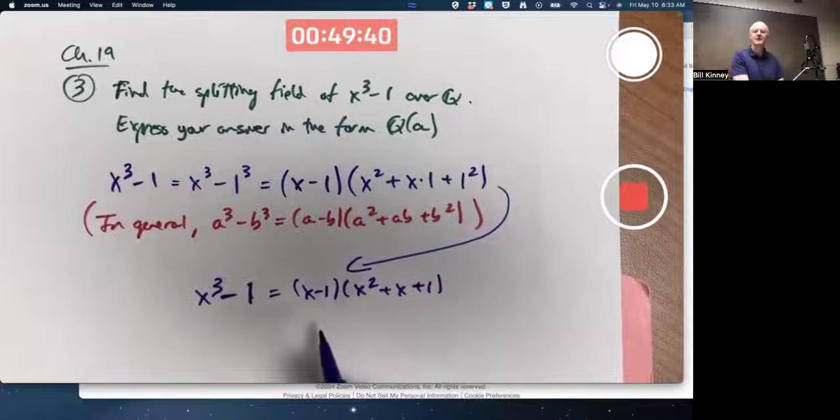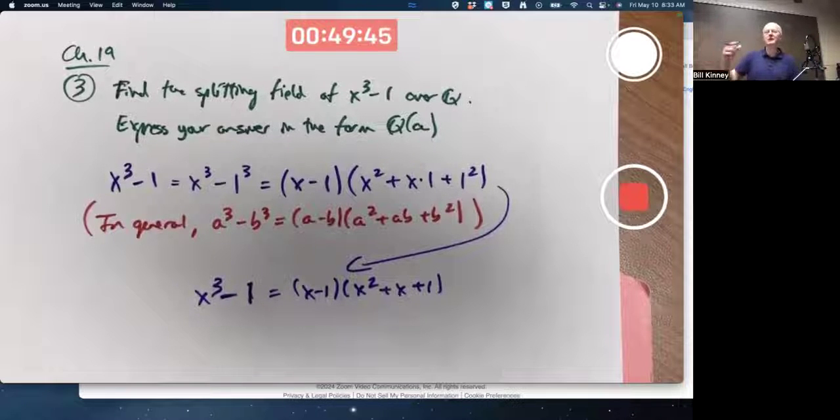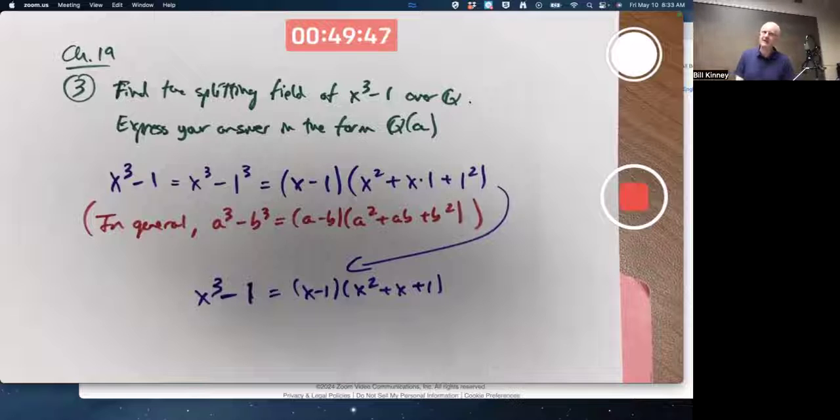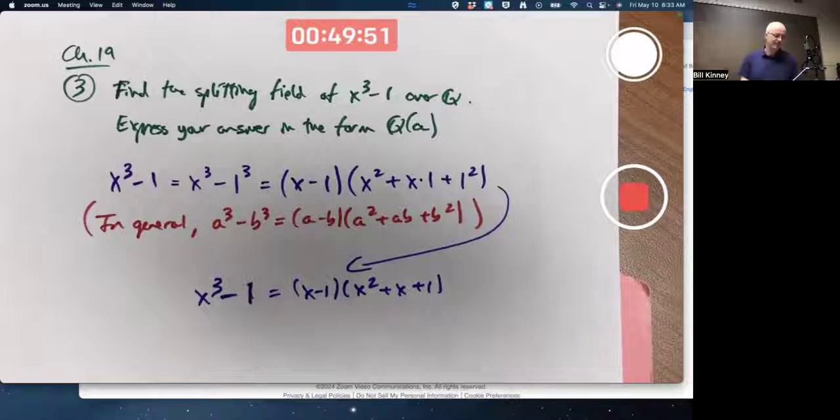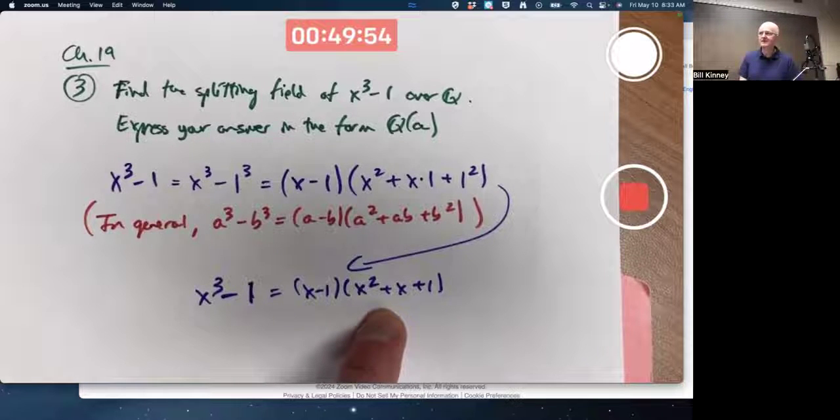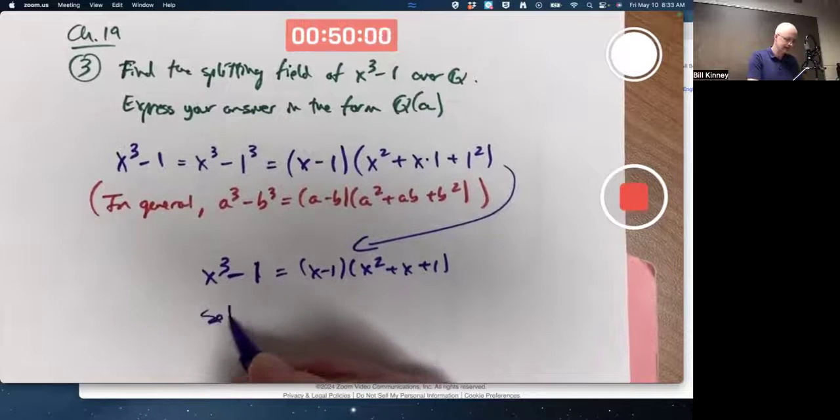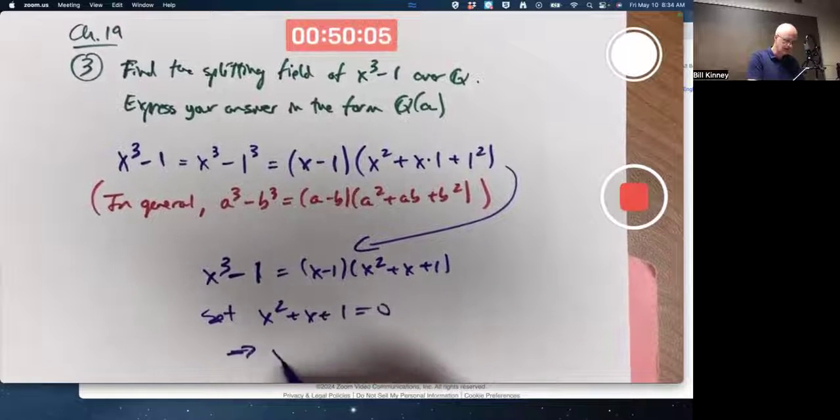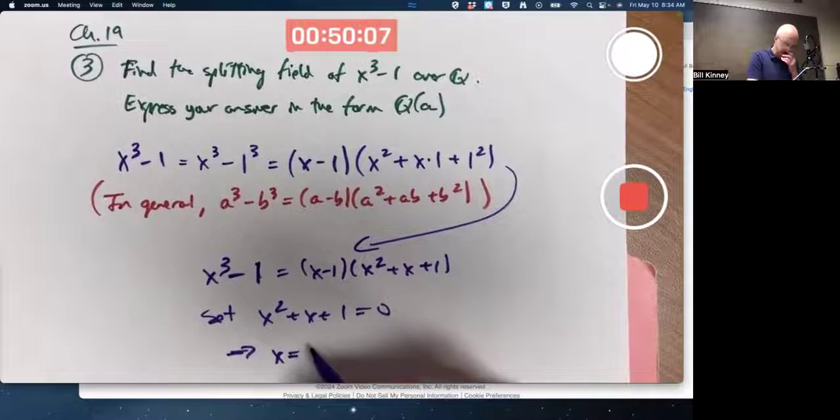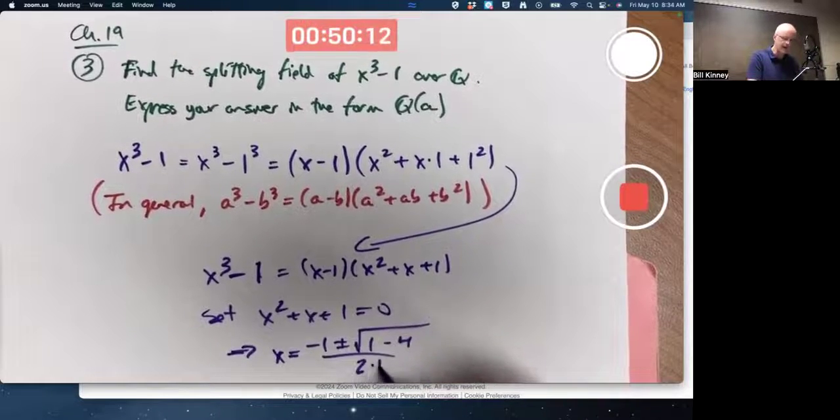So one root of this cubic is the number 1. So one thing we'll adjoin is 1, but you really don't need to adjoin 1 because it's already rational. The other two roots are going to come from the roots of this quadratic here. What are those? We can use the quadratic formula.